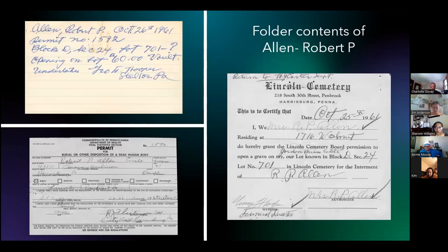This is a display of all three records in Robert Allen's folder. The name is the same on two of the three documents, but the initials used on the other record are in agreement, so we can conclude his name is Robert P. Allen. There are four dates, but only one is specified as the date of death, so we know that's the date we're going to type in. Only the permit for burial has the place of death, so there's no confusion there. Two records have the cemetery plot number and they are in agreement.